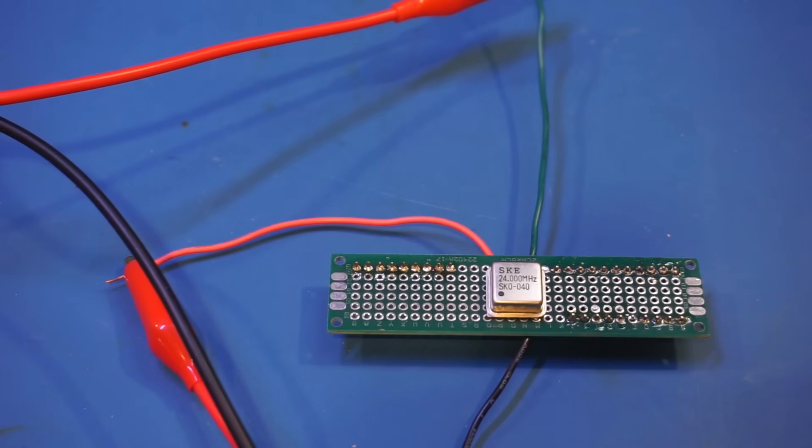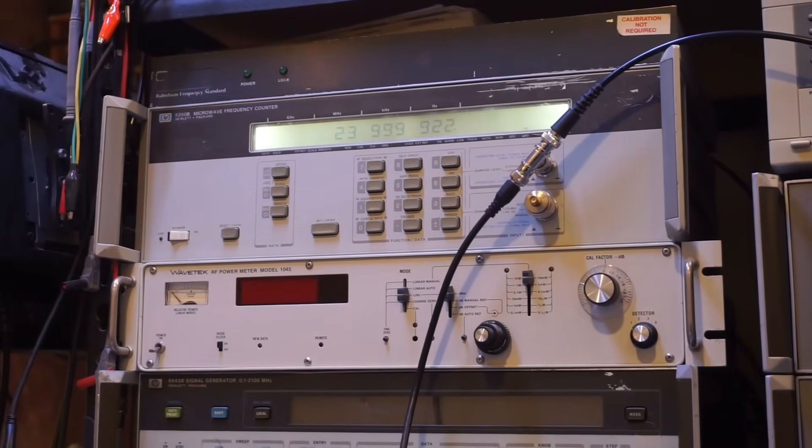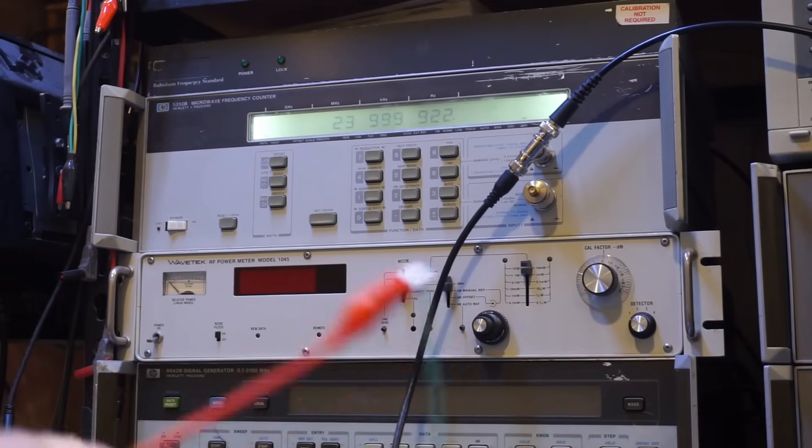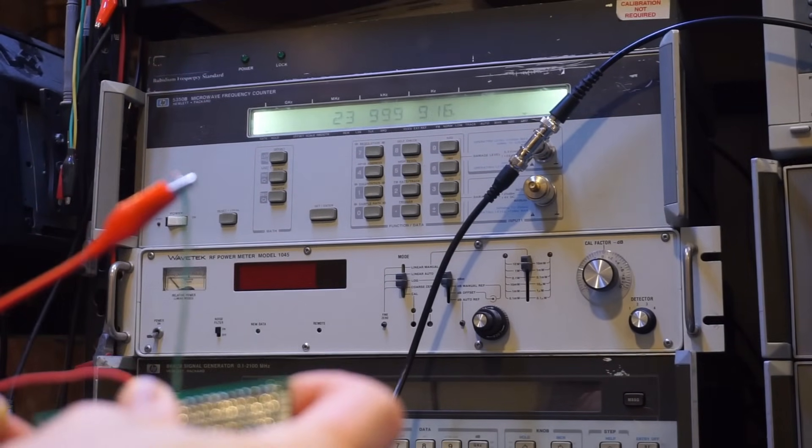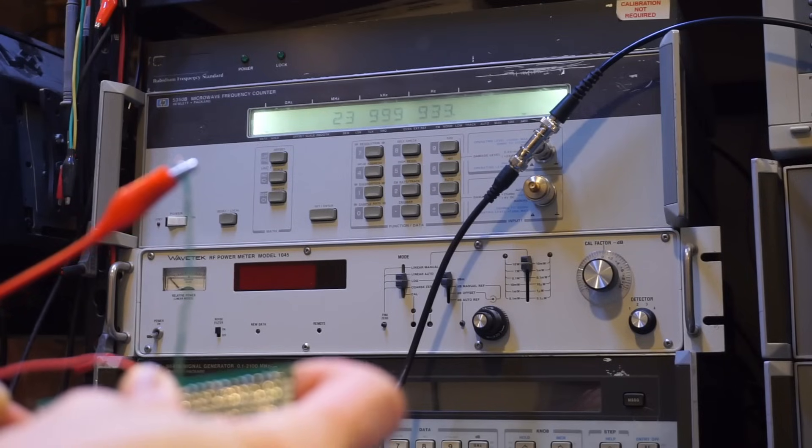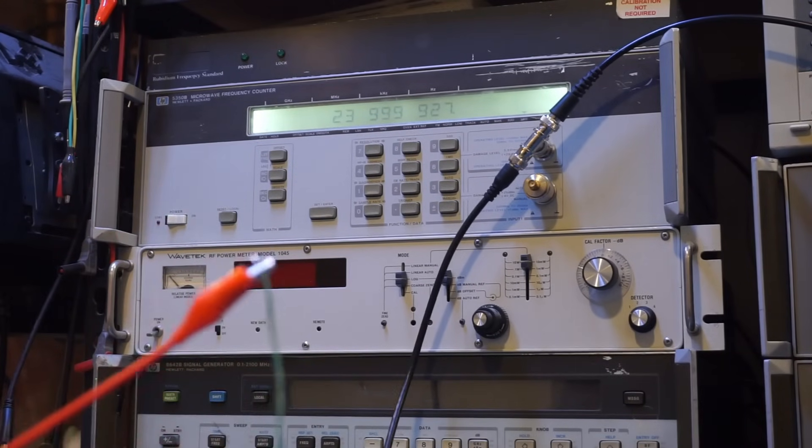What I'm going to do is put my finger on this crystal can. I want to see how that affects the frequency output. Let me set the camera to point to the HP5350B. If I put my thumb on it, you can see that in just a few seconds we already see about 20 Hz or so frequency change.